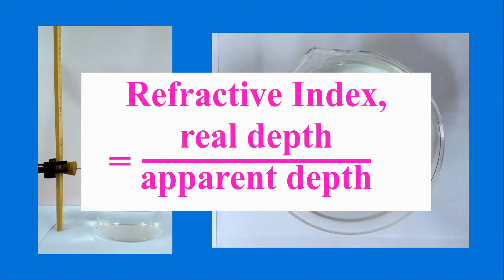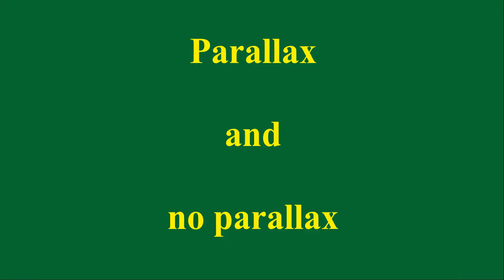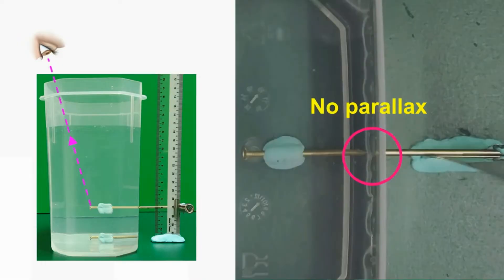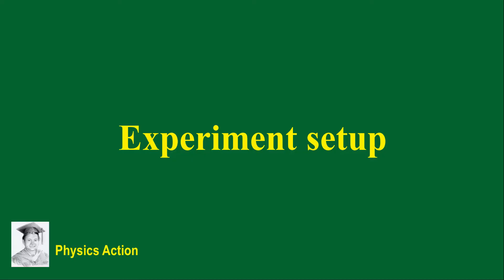Refractive index. In the previous video, we watched parallax and non-parallax conditions. Parallax exists because the image and the pin are not at the same level. There is no parallax because the pin and the image are at the same level. Note that the experiment shown in this video may have slight differences from your school.